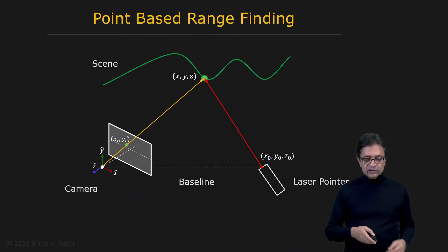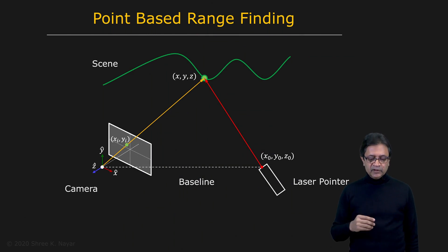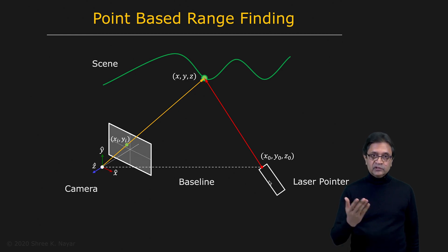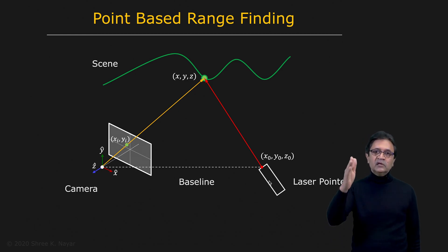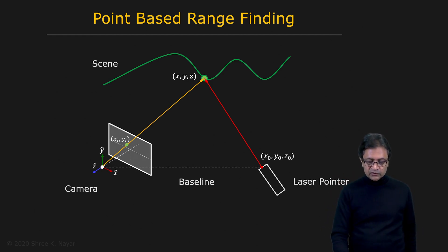The simplest way you can do this is called point-based range finding. In this case, you have a three-dimensional scene and a camera, along with a light source — which happens to be a laser pointer. It produces one ray of light, not illuminating the entire scene, just one ray of light, shown by the red line right here.